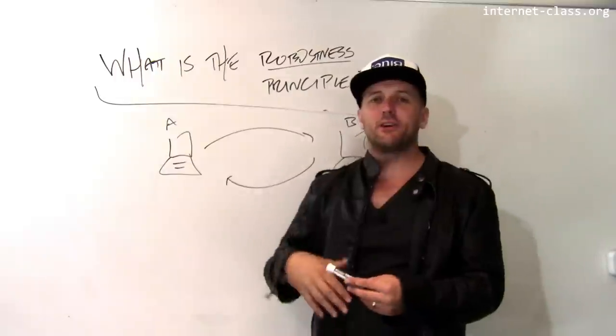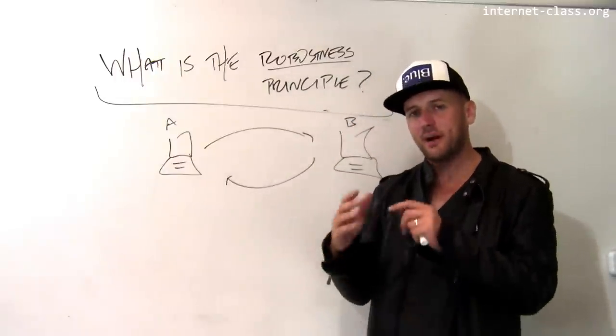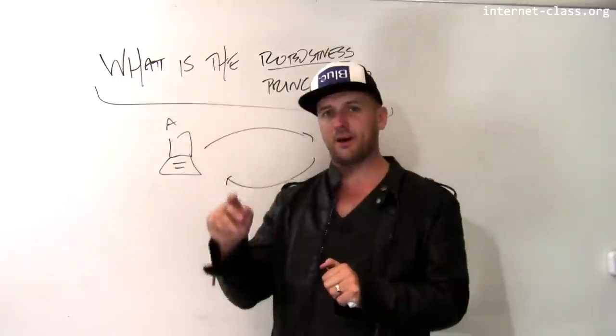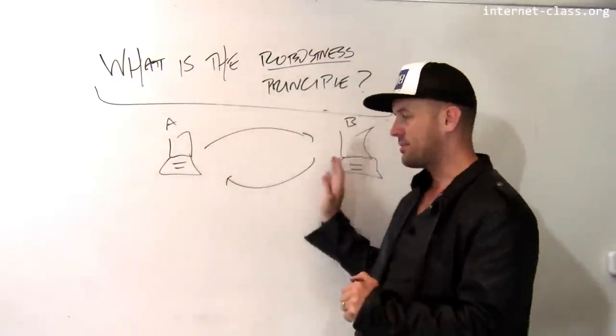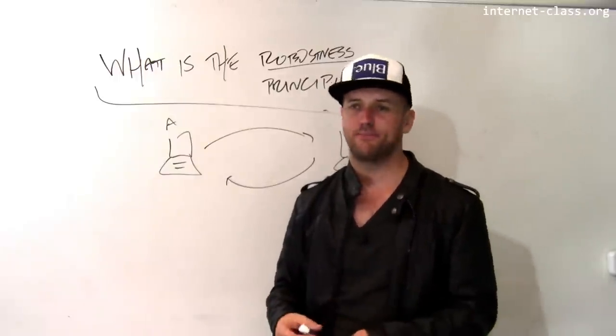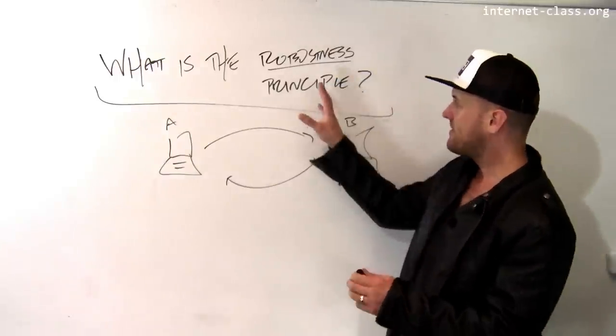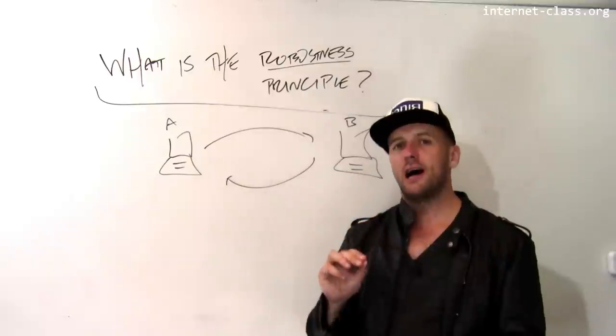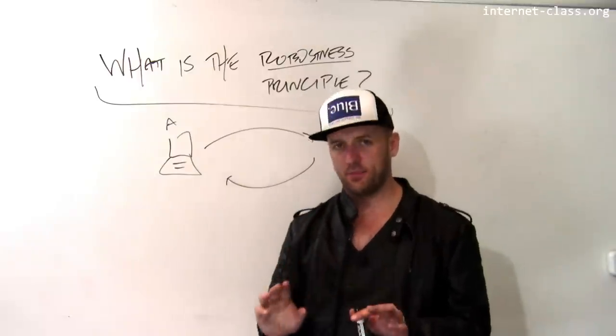But again, these protocols are written in human language. And despite the fact that the protocol specifications try to be very, very specific about exactly how each computer should respond when they're communicating to each other, people make mistakes. And so what happens, what the robustness principle states, is that protocol implementations should try to be as accommodating as possible.